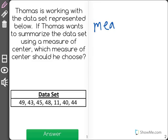So there are three measures of center he could use. He could use the mean, he could use the median, or he could use the mode.